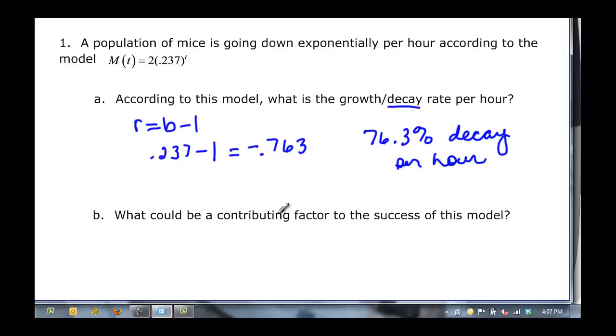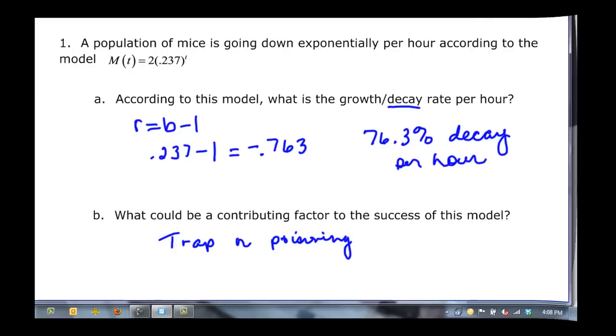What could be a contributing factor to the success of this model? The only way I know about population of mice going down would be either traps or poison, something that is going to be collecting and getting rid of the mice.